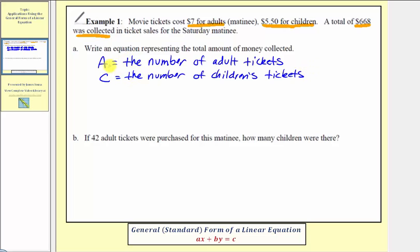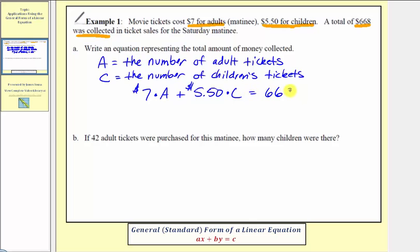Now because adult tickets sell for seven dollars and children's tickets sell for five dollars and fifty cents, the total amount of money collected would have to be seven dollars times the number of adult tickets, which is A, plus five dollars fifty cents times the number of children's tickets, which is C, and we know the total amount collected is six hundred sixty-eight dollars. So we simplify and drop the units. Our equation is: seven A plus five point five C equals six hundred sixty-eight.